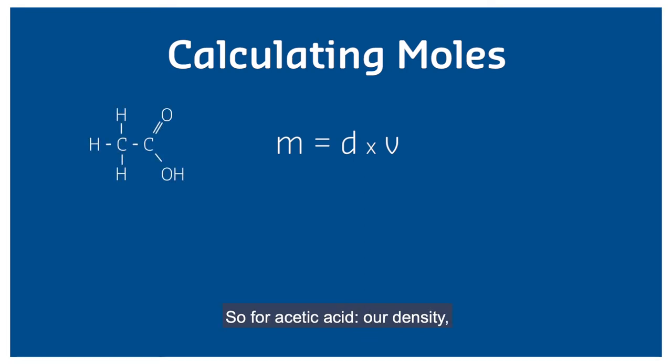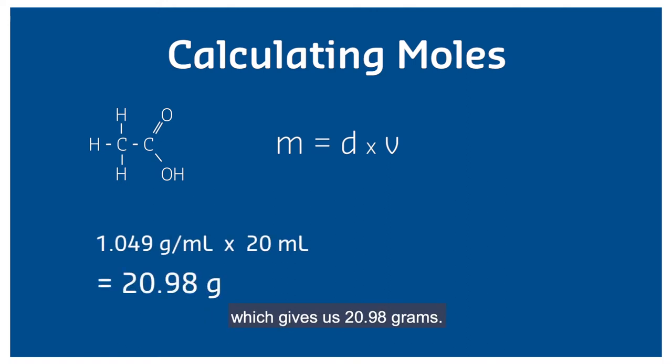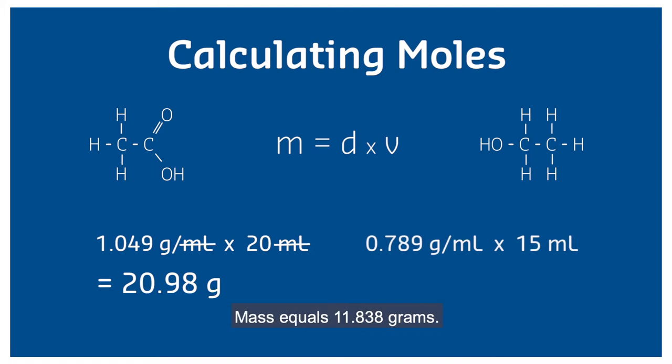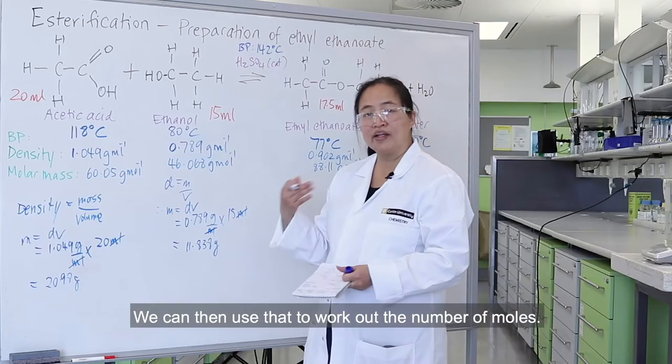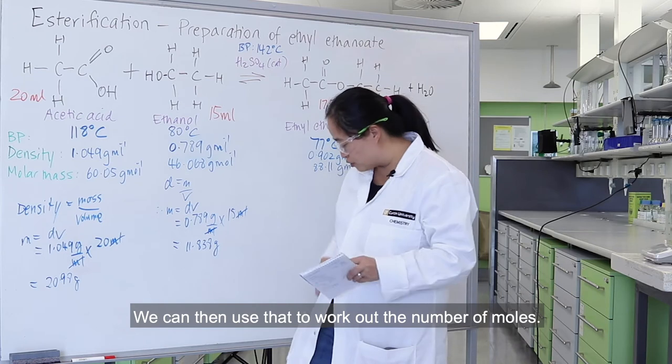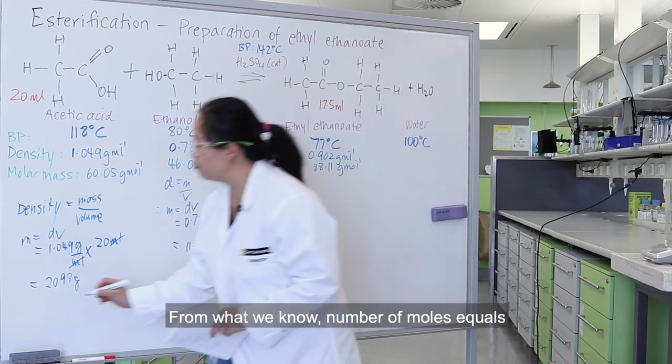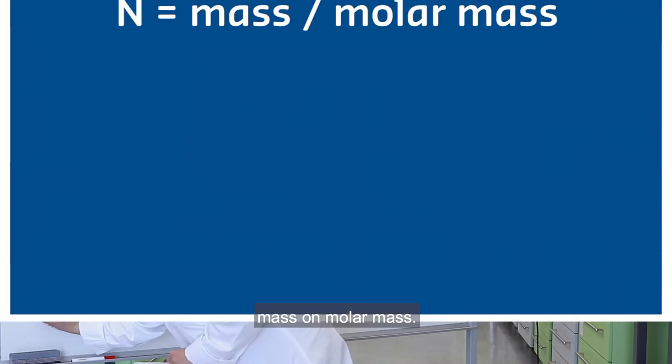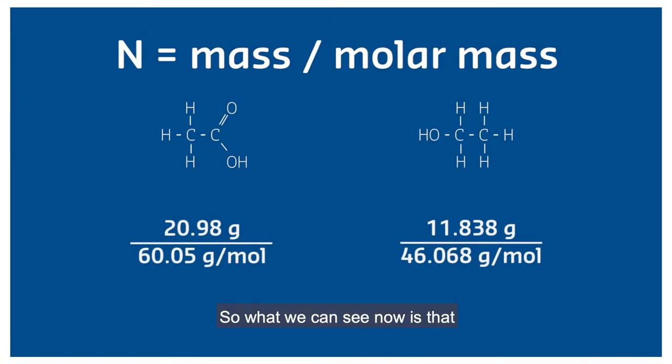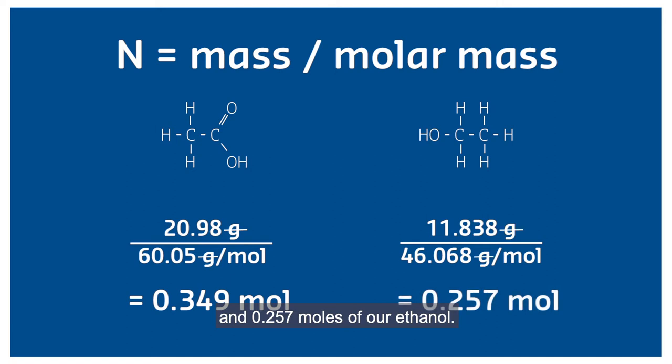For acetic acid, our density multiplied by the volume gives us 20.98 grams. For our ethanol, we do the same: mass equals 11.838 grams. We can then use that to work out the number of moles. We know number of moles equals mass over molar mass. So we have 0.349 moles of acetic acid and 0.257 moles of ethanol.